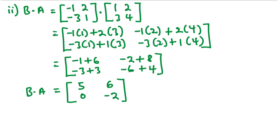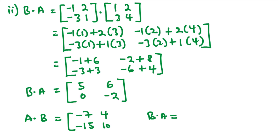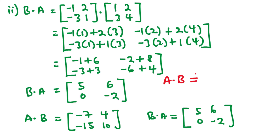What can we deduce from the two solutions? For matrix AB we had [−7, 4, −15, 10] and for matrix BA we had [5, 6, 0, −2]. Therefore, it is evident that matrix AB is not equal to matrix BA. Hence, matrix multiplication is not commutative.